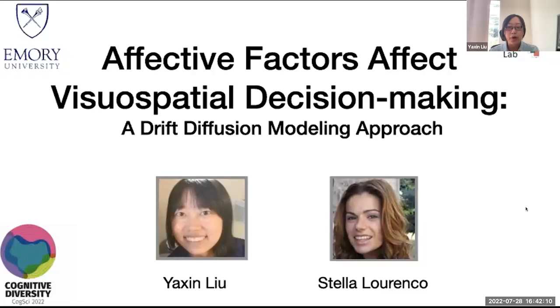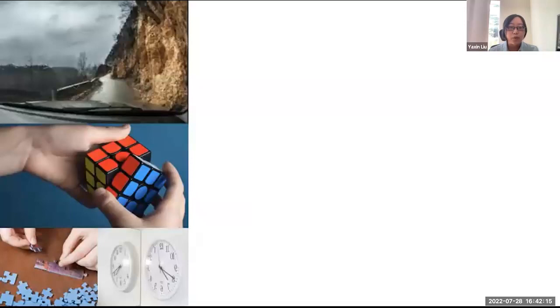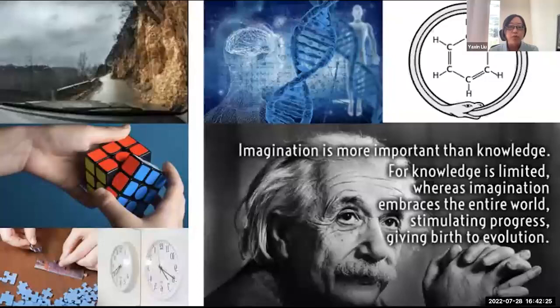Spatial reasoning and visualization is important for everyday tasks, such as navigating space and interacting with the objects around us. But visualization is also crucial for unlocking scientific breakthroughs. For example, it was a mental imagining of atoms twisting and turning like snakes that is thought to have been the visual origins of the discovery of the benzene ring.